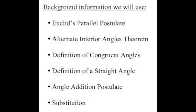Let's review the background information we'll use to prove that the sum of the angles in a triangle equals 180 degrees. First, Euclid's parallel postulate gives us the line we'll need to line up the angles with. The alternate interior angles theorem tells us that the two inside opposite angles within parallel lines are congruent. The definition of congruent angles tells us congruent angles have equal measures. A straight angle equals 180 degrees. The angle addition postulate tells us two smaller angles sharing a side equal the larger angle. And we can substitute one variable for another as long as they're equal.